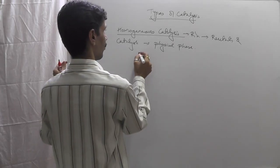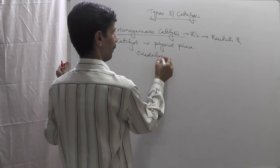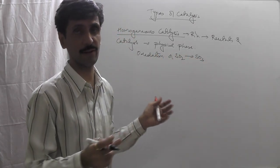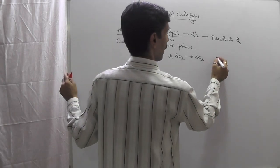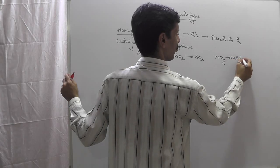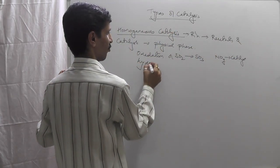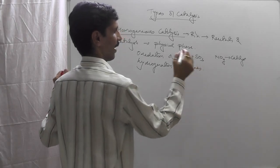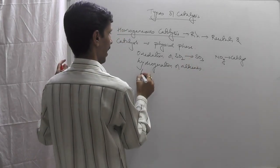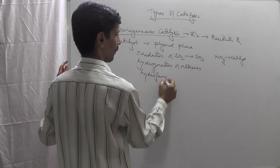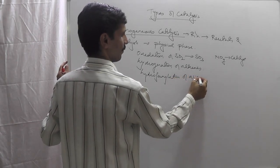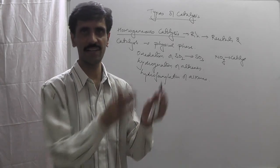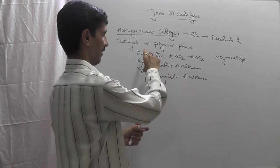An example of homogeneous catalysis is the oxidation of SO2 to SO3. Since SO2 is a gas, we use a gaseous catalyst, which is nitric oxide (NO) gas. Other examples include hydrogenation of alkenes, which gives you an alkane, and hydroformylation of alkenes. So reactants and catalysts are in the same physical state in all these examples.